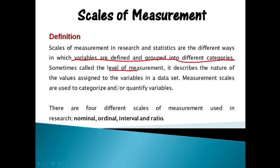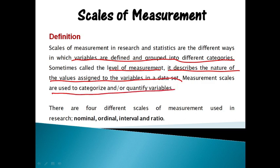Scales of measurement are also called levels of measurement. It describes the nature of the value assigned to the variables in a data set. Measurement scales are used to categorize or quantify variables. There are four different scales of measurement used in research: nominal, ordinal, interval, and ratio. You can remember these using the word NOIR, where N stands for nominal, O for ordinal, I for interval, and R for ratio scale.